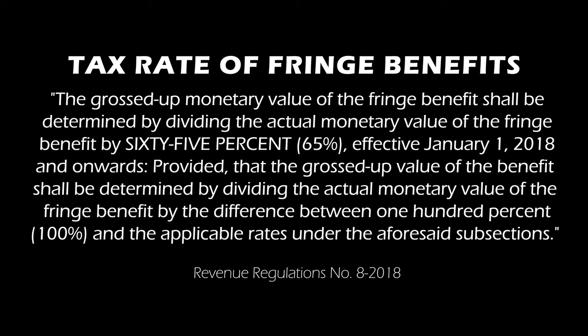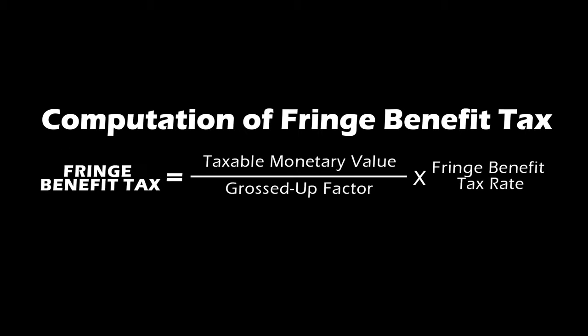The tax rate for fringe benefits, effective January 1, 2018 with the implementation of the TRAIN law, is increased to 35%. The gross-up monetary value of the fringe benefit given to non-rank and file employees shall be determined by dividing the actual monetary value by 65. To compute your fringe benefit tax, take your taxable monetary value, divide by the gross-up factor, then multiply by the fringe benefit tax rate of 35%.